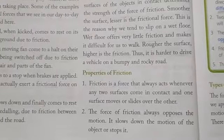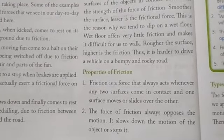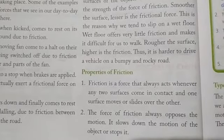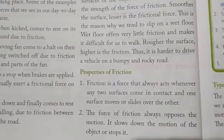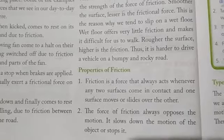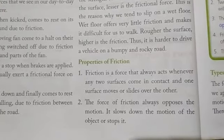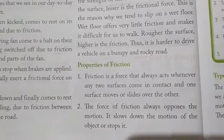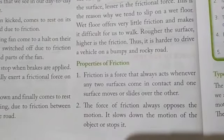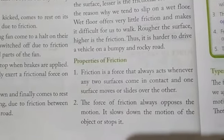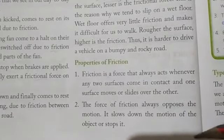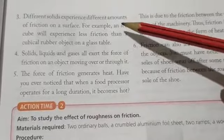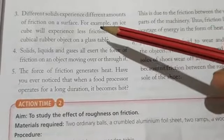Next are the properties of friction. First, friction is a force that always acts whenever two surfaces come in contact and one surface moves or slides over the other. Second, the force of friction always opposes the motion — it acts in the direction opposite to the direction of motion of objects, slowing down or stopping the motion.